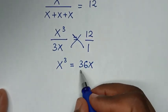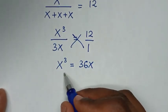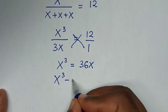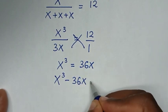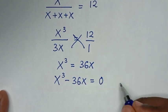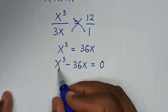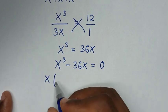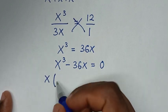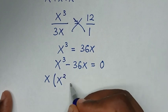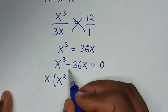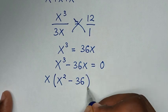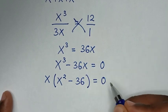Then we'll take this 36x to the left side, so it will be x power 3 minus 36x is equal to 0. From here x is common, so we'll take x out of the bracket. x power 3 divided by x is x square, and negative 36x divided by x is negative 36, so we have x bracket x square minus 36 bracket is equal to 0.